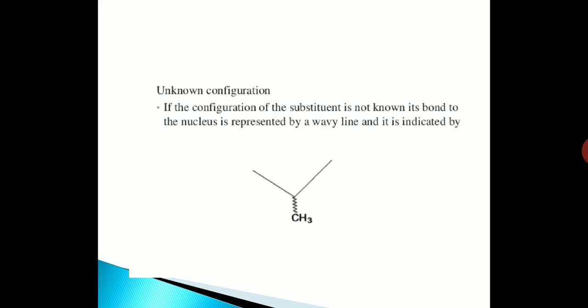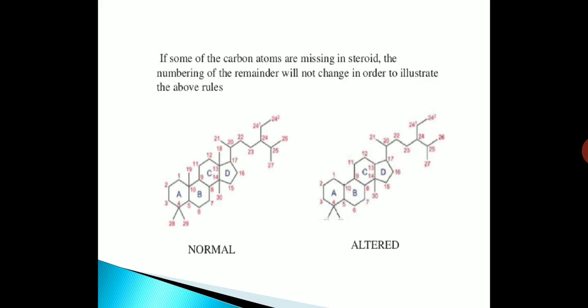The unknown configuration: if the configuration of the substituent is not known, its bond to the nucleus is represented by a wavy line, as indicated by the figure shown below.